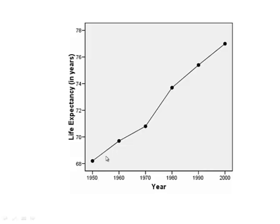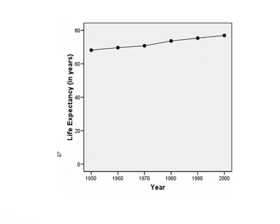In 1950, life expectancy was 68.2, and we can see it has increased every decade. This graph displayed the data from the table, but again it starts at 68. When the vertical axis is started at zero, these differences really don't look as dramatic. So anytime you're viewing a graph where it has been truncated — where it does not start at zero — you should be aware that the differences may be exaggerated.